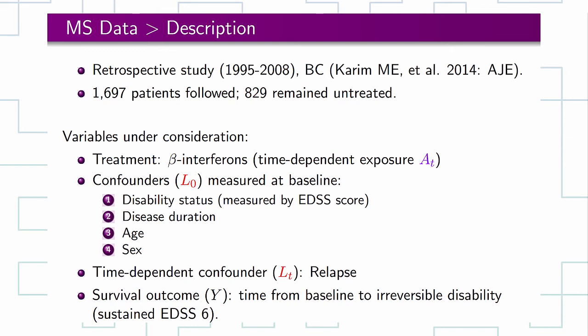The dataset that we will analyze is collected from the British Columbia Multiple Sclerosis Clinic from 1995 to 2008. A few baseline confounders are present and relapse is considered as a time-dependent confounder. I will use marginal structural Cox model to deal with this time-dependent confounder.